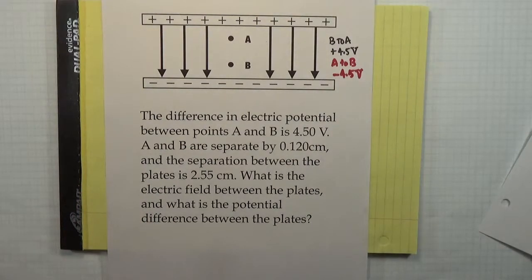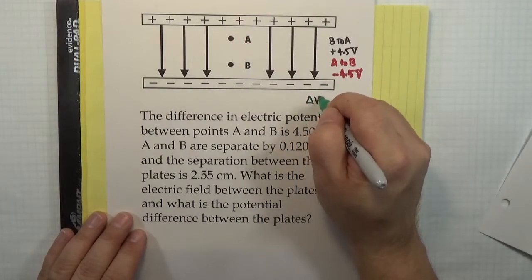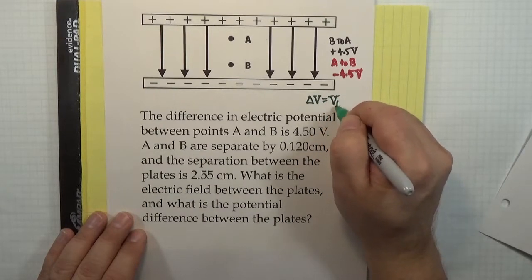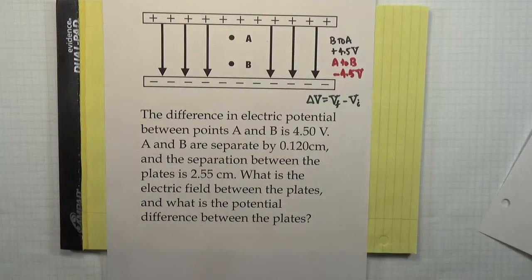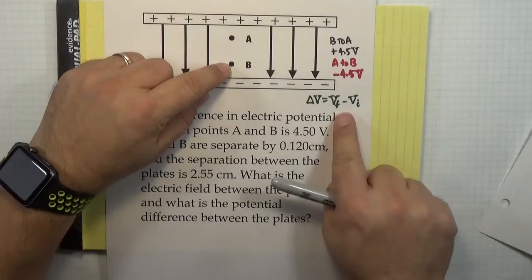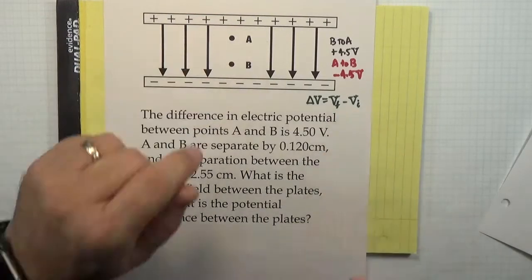The reason that we do that is we know that the difference of potential between points is the potential at my final point minus the potential at my initial point. And so if I start at A and end at B, that gives me a different sign than if I start at B and end at A. So keep that in mind as we solve the problem.